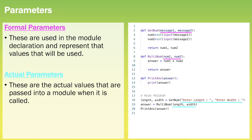Formal parameters are used when we're declaring a module and represent the values that will be used. For example, in get_num our formal parameters are message1 and message2 — they are formal because we don't actually know what they're going to be, but we know there'll be content within them. Actual parameters are used when we call the module and specify the values we want to use. So on line 18, when get_num is called, our actual parameters are 'enter length' and 'enter width'.